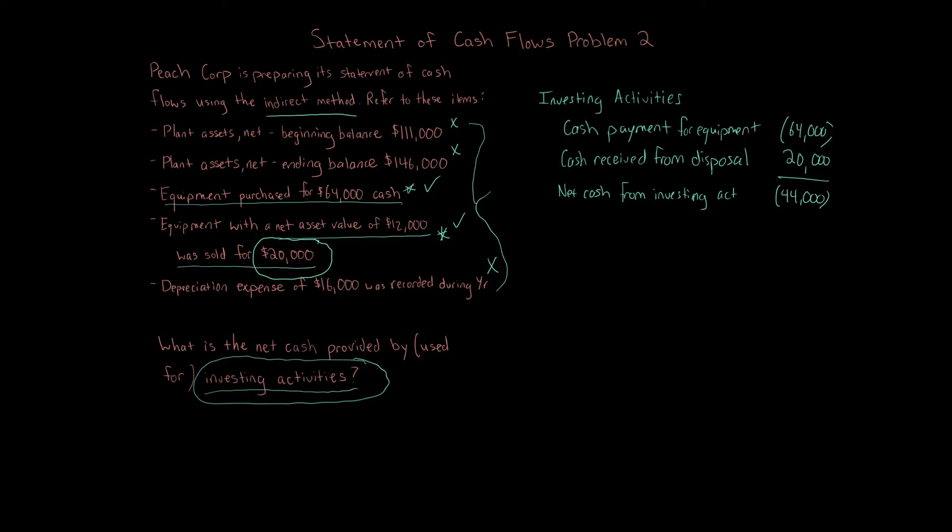Now, before I conclude the problem, that depreciation expense, which we did not record here, where did that go? Depreciation expense gets recorded as an increase to cash on operating activities. So always remember that we're doing the investing activities in this problem, but always keep in mind how these things affect the other sides of the statement of cash flows or other sections of the statement of cash flows, like operating activities.